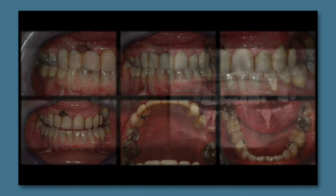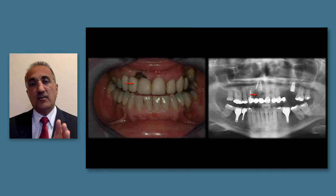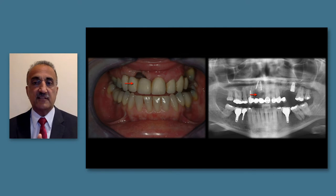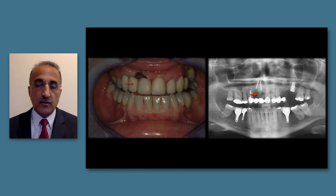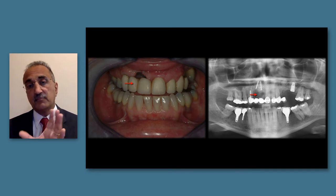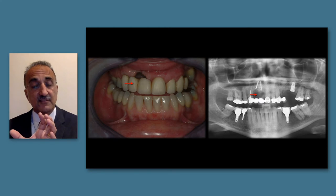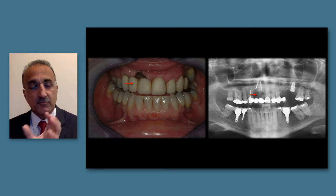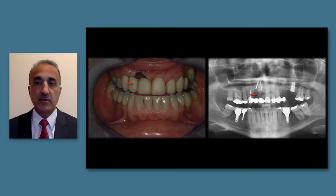We considered utilizing orthodontics: moving the canine into the position of the lateral incisor to reduce the size of the defect, bringing healthy bone, the papilla, and interproximal bone peak into the area. This would give us a smaller, single-tooth defect with two bone peaks on the adjacent teeth, providing a much more predictable outcome in terms of augmentation and rebuilding of the ridge.